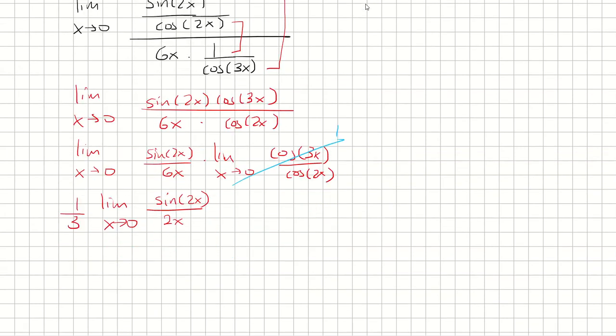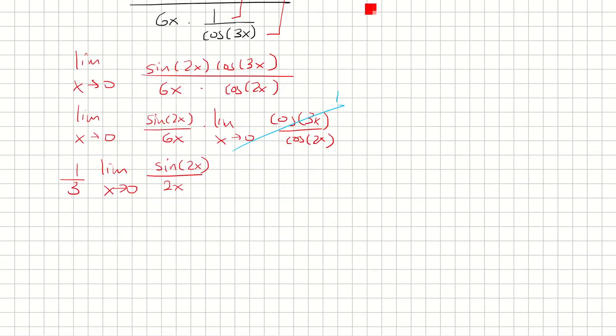And now you can think of this as limit as theta approaches 0 of sine theta over theta, and then multiply by the 1 third. Because what I did here was I let theta equal 2x, and as x approaches 0, theta will also approach 0. And we know that this limit is 1, so we multiply by 1 third. We get that our final answer is 1 third.